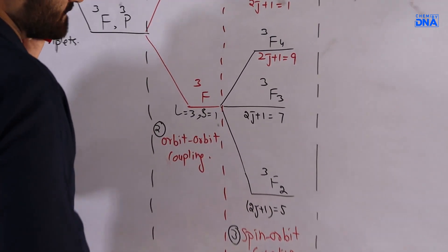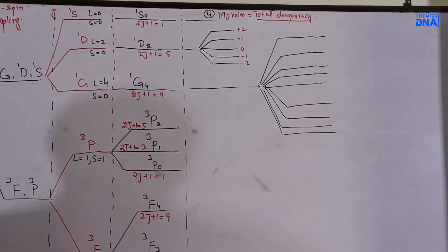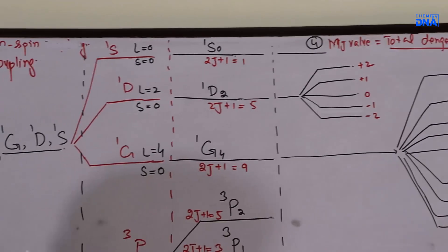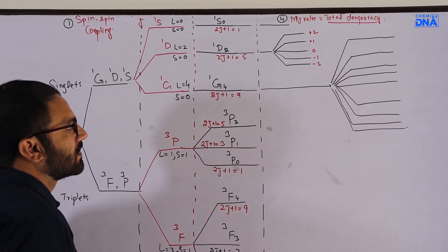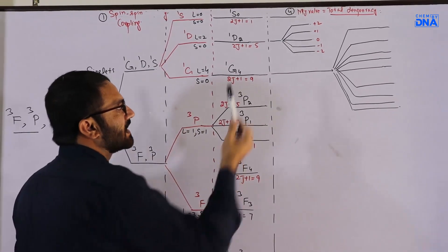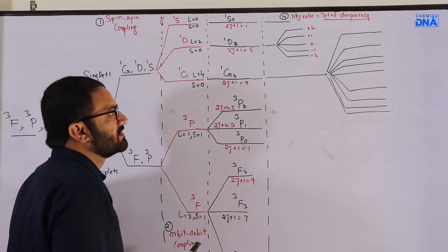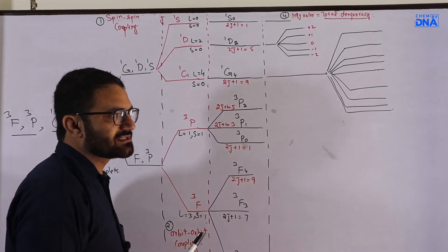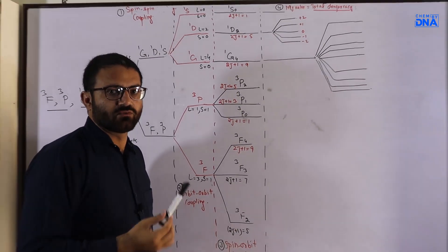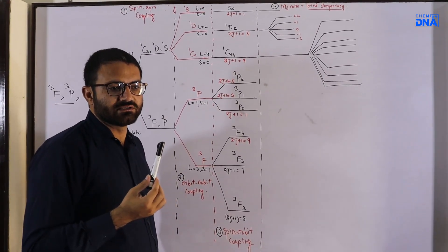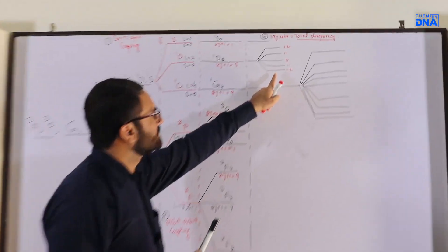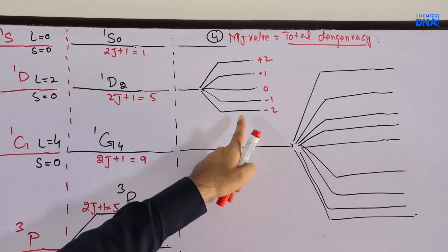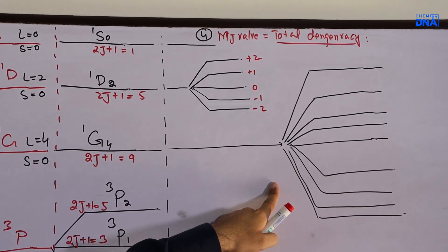After the spin-orbit coupling stage, we move to the fourth stage where these spectroscopic terms, when placed in a strong magnetic field, give us the splitting patterns. Using the mJ values you can calculate the total degeneracy of the system. In this d2 system, 45 degeneracies will be observed.